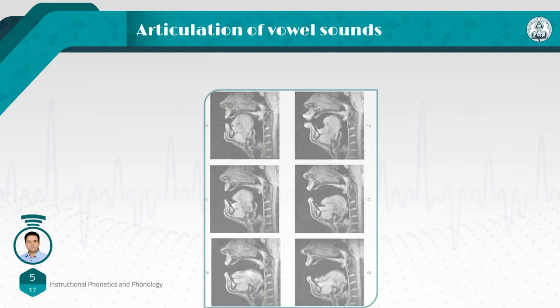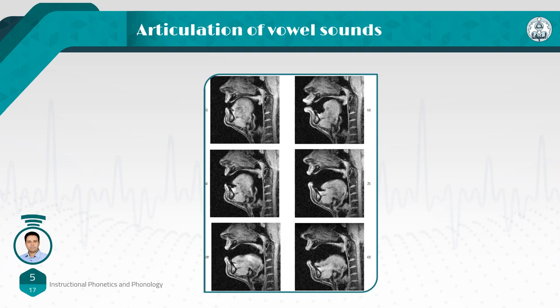In this slide, you can see MRI images of the mouth and the position of the tongue in producing different vowels. The first one on the left is the shape of your mouth and the position of your tongue when you produce a vowel like 'ee.' Look at the shape of your tongue and also the shape of the lips when we produce 'ee.' Next one, just to the right of it, is 'u.'